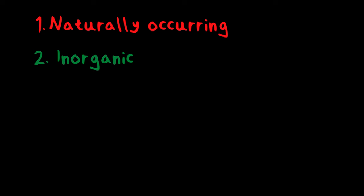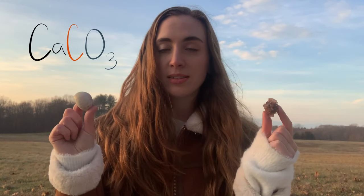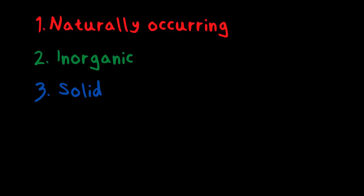The second characteristic of minerals in geology is that they are inorganic. This means that they are not made from living materials or something that used to be living. For example, we have aragonite and a seashell — these are made out of the same elements and have the same chemical formula, but they are not both minerals. A seashell is not a mineral because it was made from a living organism, and aragonite was not — it was made from geological processes.